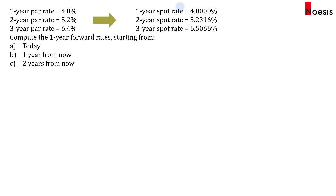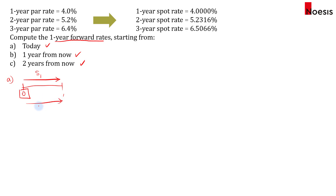Once we've obtained the spot rates, we may be asked to calculate the one-year forward rates starting from today, one year from now, and two years from now. The one-year forward rate starting from today is exactly equal to the one-year spot rate — no computation needed — so this is simply 4%. For part B, we want the one-year forward rate starting one year from now, which covers the period from year one to year two.